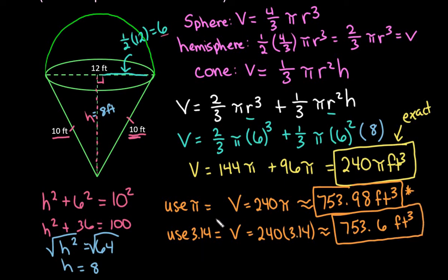If you're on an online homework platform and keep getting it wrong, try using the opposite value for pi and see if that fixes it. Also, if they ask for an exact answer, make sure you leave it in terms of pi. Thanks for watching — if you have any questions or additional topics you'd like me to cover, please let me know.